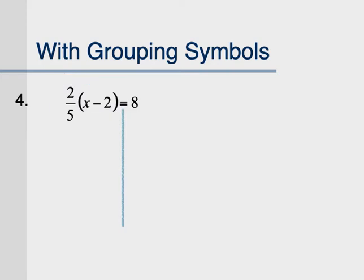Occasionally you have a number times the quantity in parentheses that you don't really want to deal with by distributing — like distributing 2 fifths to everything in the parentheses is kind of a pain. So I'm going to show you an alternate way to work that will get rid of the fraction. Do you remember learning about reciprocals? A reciprocal is a flipped version of a fraction. If you multiply reciprocals together, they cancel each other out. So I can treat the 2 over 5 as the outside layer of the onion and cancel it out first instead of distributing it — and it will get me the same answer with a lot less work.